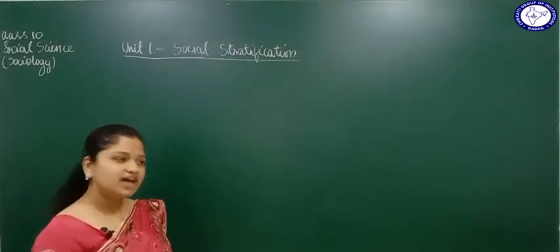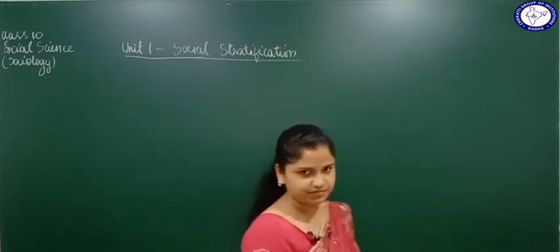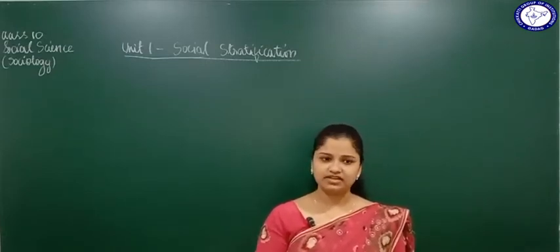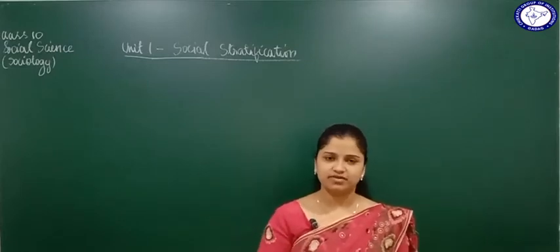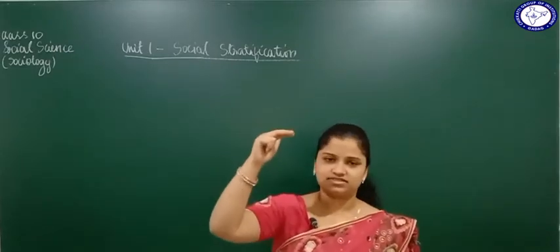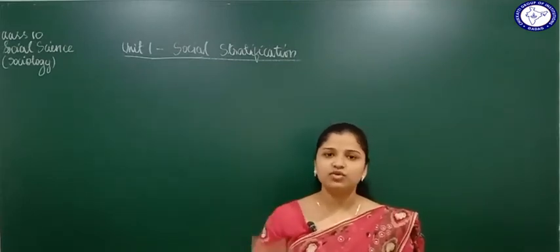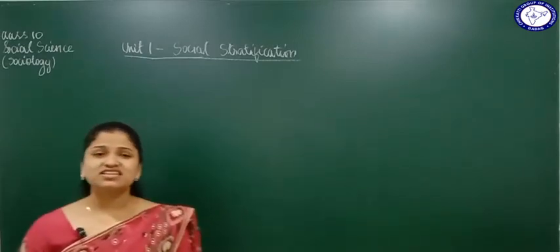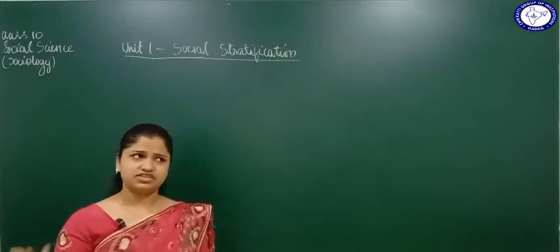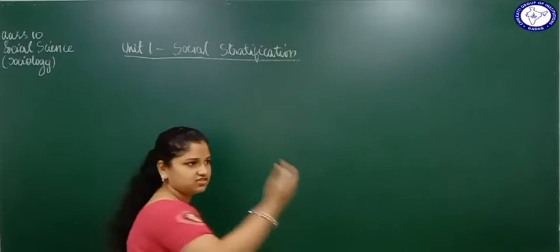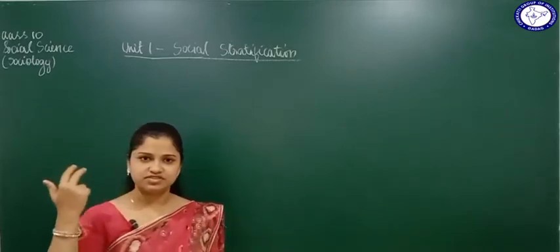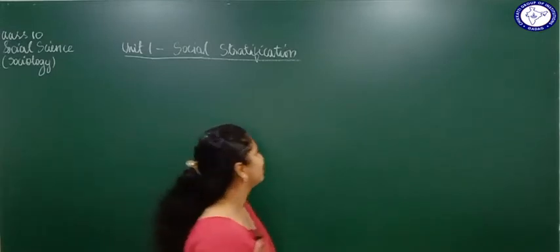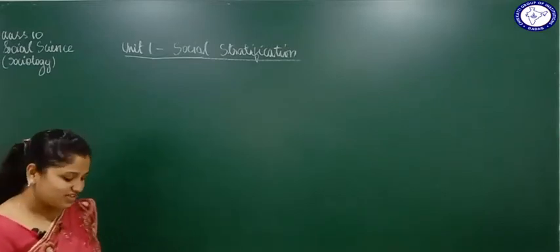Class comes under income. If you have more income you are high class, moderate income makes you middle class, and very low income makes you low class. Race relates to skin color — dark skinned, brown skinned, fair colored — so people are also divided based on race.